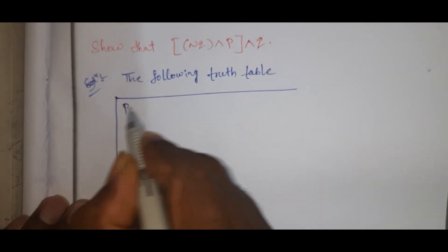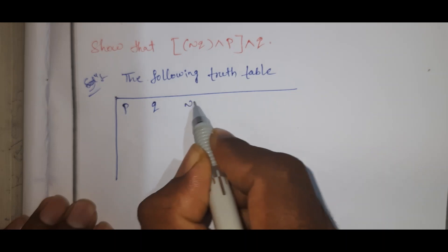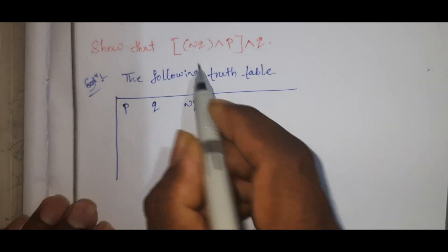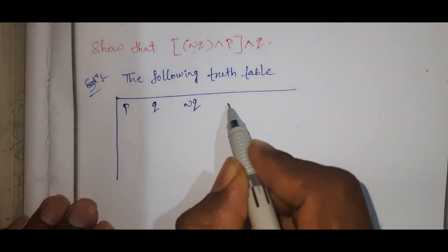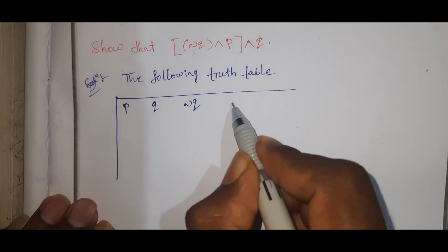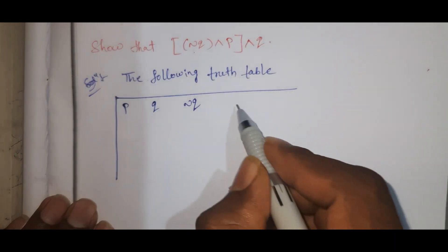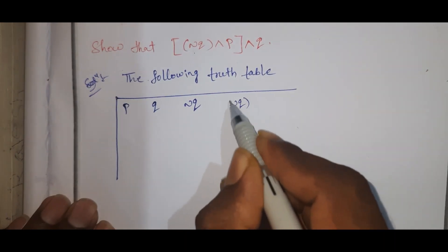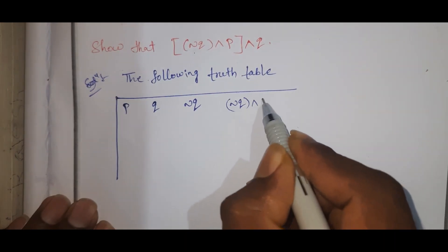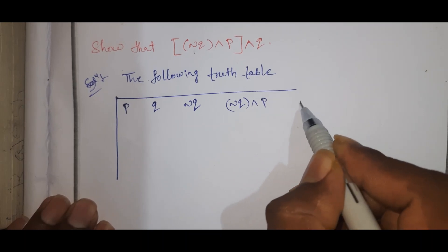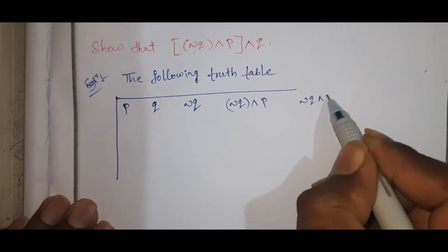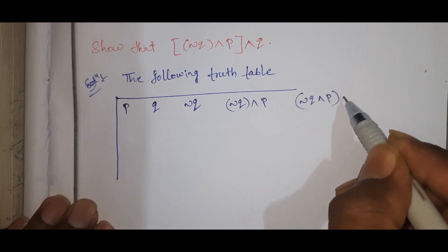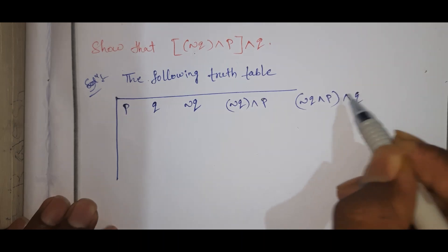The columns are: P, Q, negation Q. Then we get the next column: negation Q AND P. We will also show the column for Q.